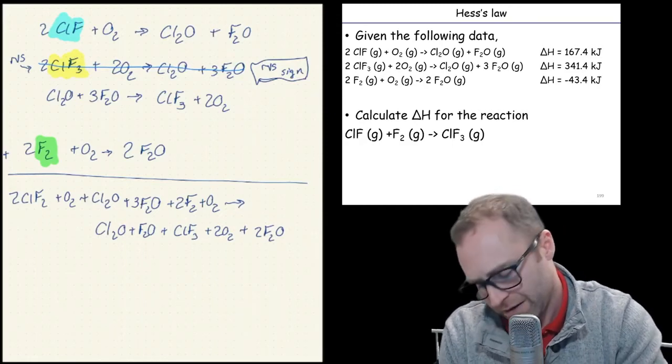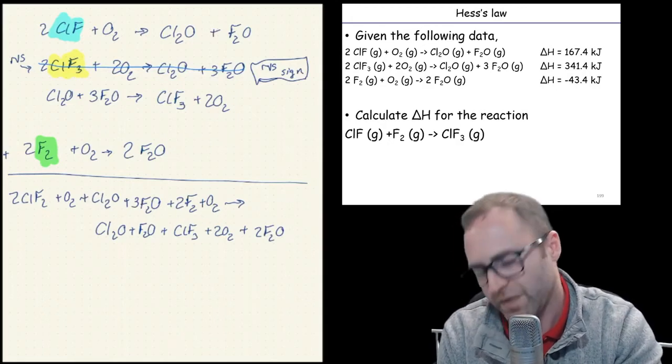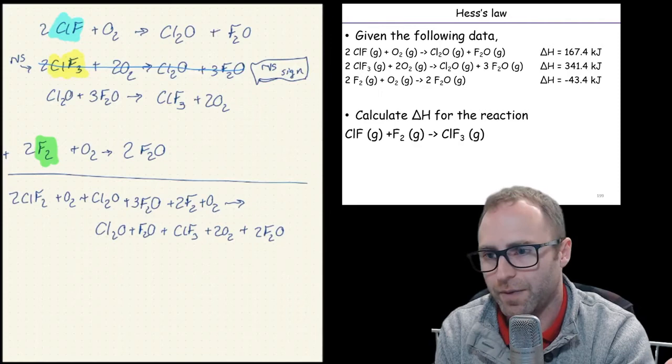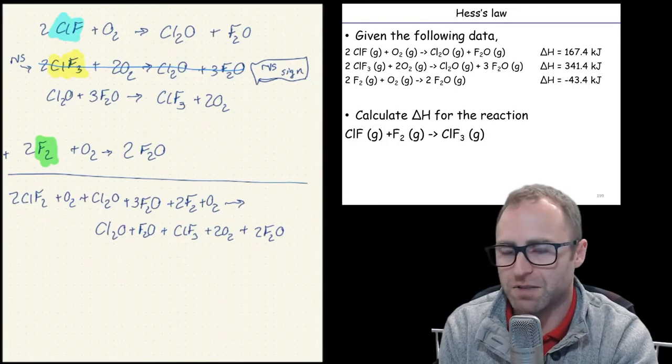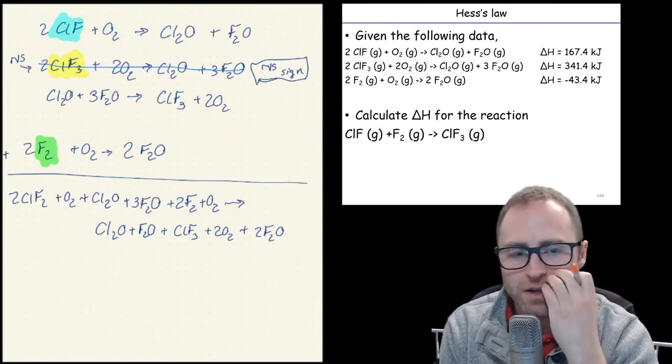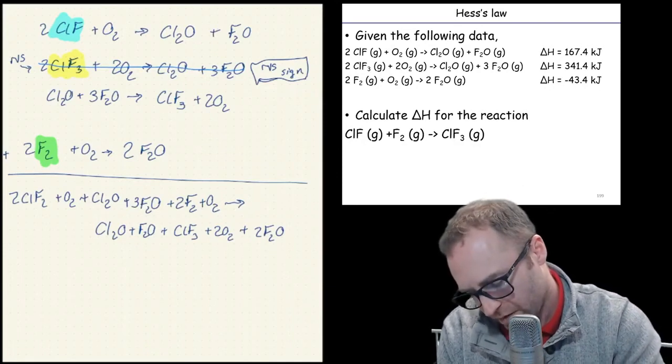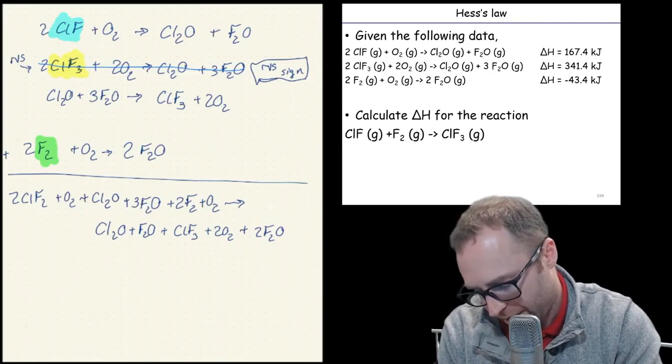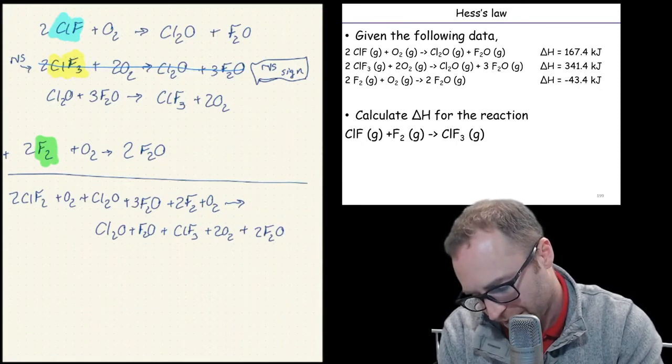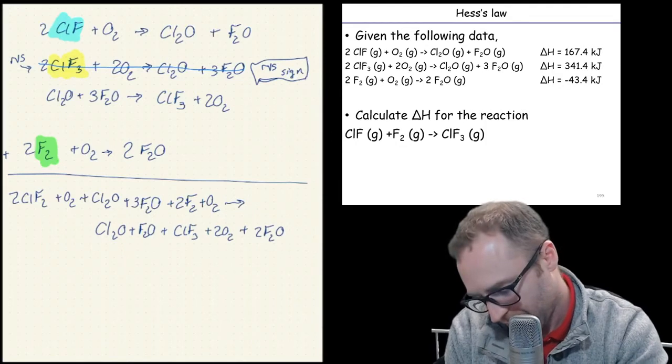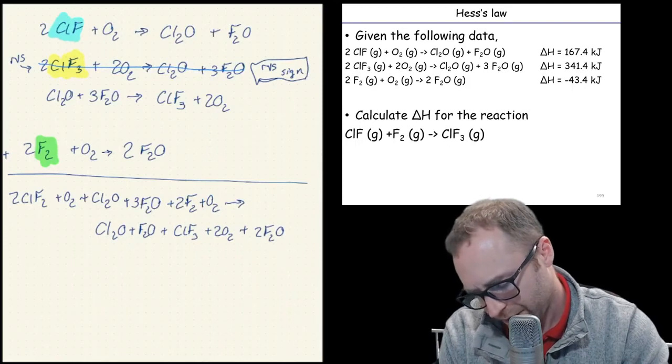They can cancel then. Because it's showing up on the reactants and the products in the exact same form in the exact same phase. It's almost like it's a spectator. When we talked about spectator ions back in chapter four. Do we have anything else that we can cancel out? So if we go here we have our Cl2O as a reactant. We have it as a product. Easy breezy. We can cancel that out.